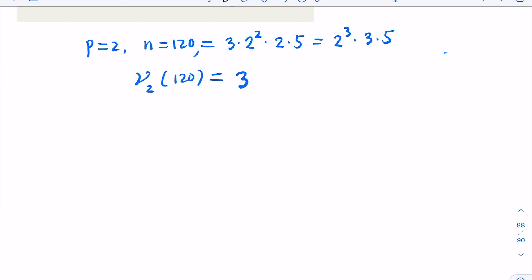Now, since we're dealing with factorials, we are interested in what is the p-adic value of n factorial. In this case, for example, what is the prime number 2 in the 120 factorial? So what is that?